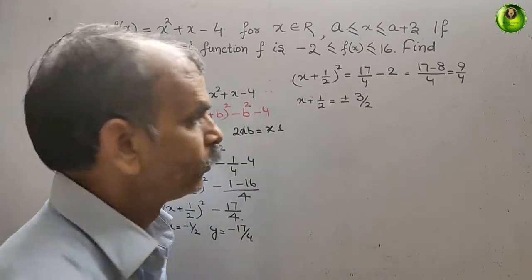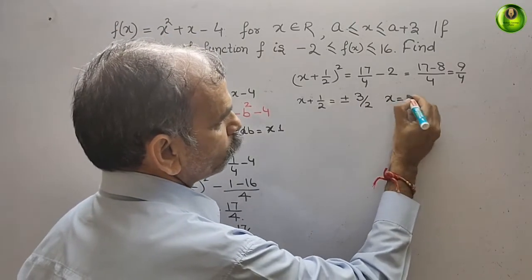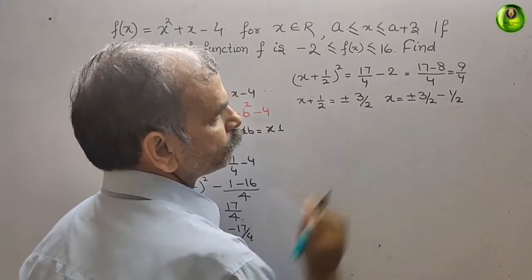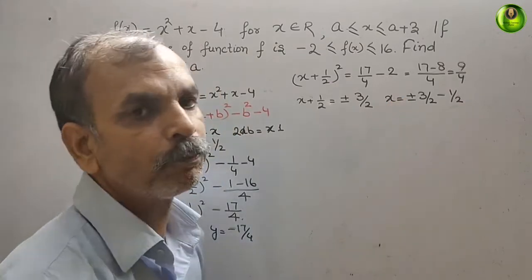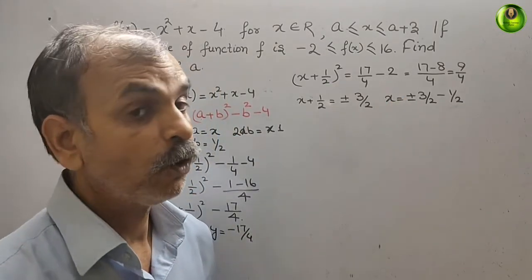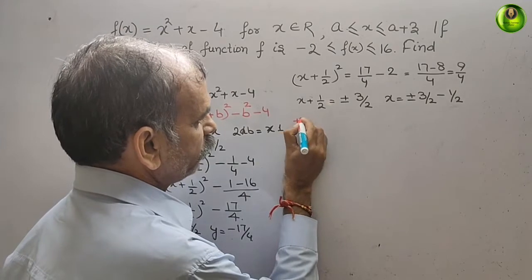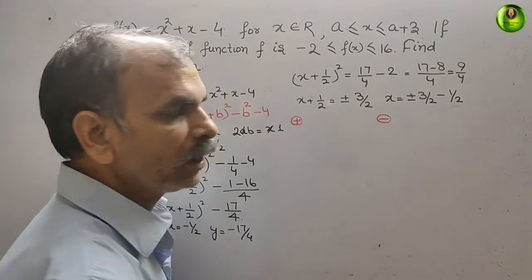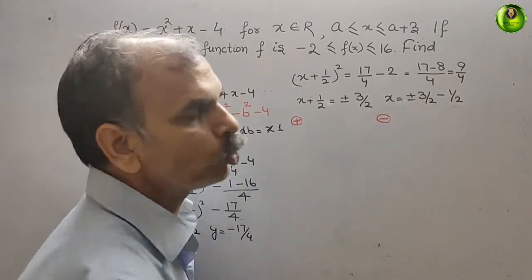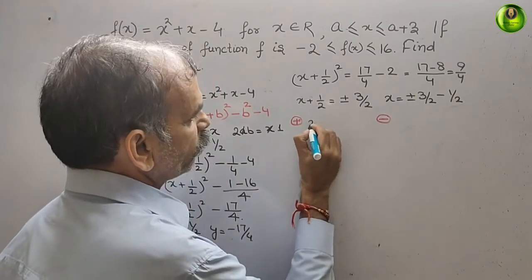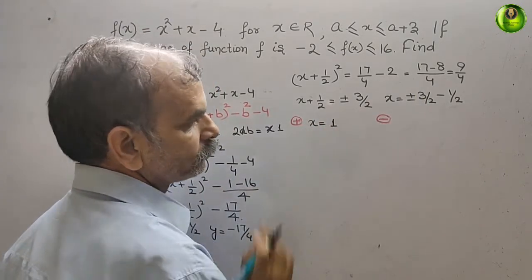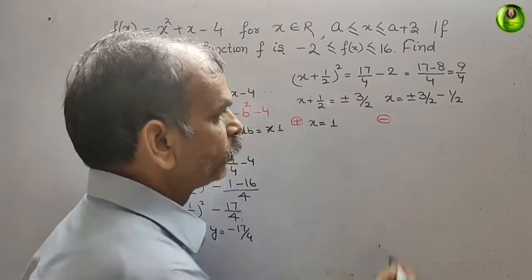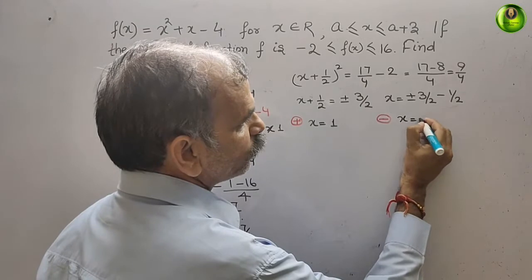Therefore x + 1/2 = ±3/2. Taking the positive value: x = 3/2 - 1/2 = 2/2 = 1. Taking the negative value: x = -3/2 - 1/2 = -4/2 = -2.